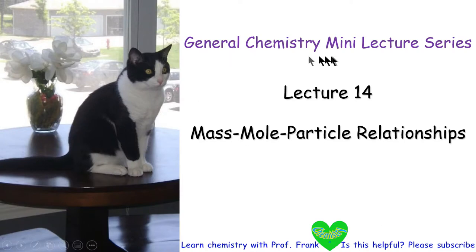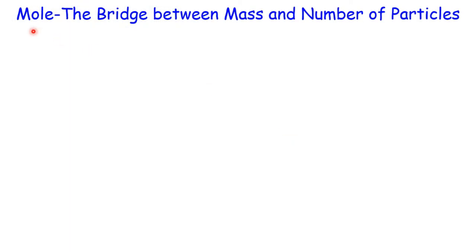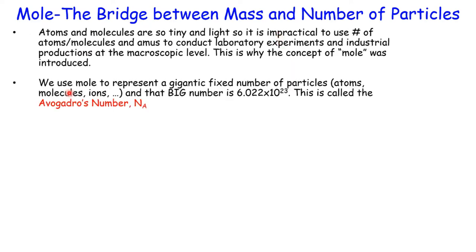Welcome back to the General Chemistry mini lecture series. Today we are going to go over lecture 14: mass-mole-particle relationships. We consider mole as the bridge between mass and the number of particles. We use mole to represent a very large number of particles — 6.022 times 10 to the 23rd — which is called Avogadro's number, represented as Na.